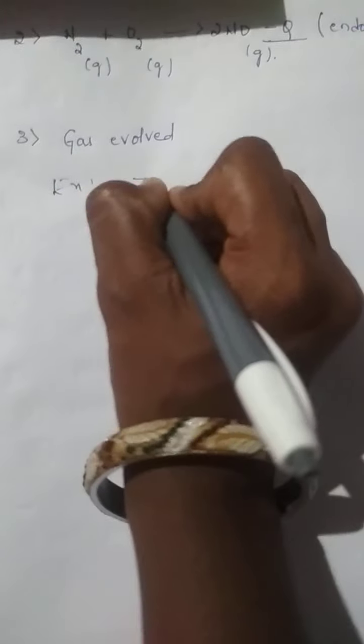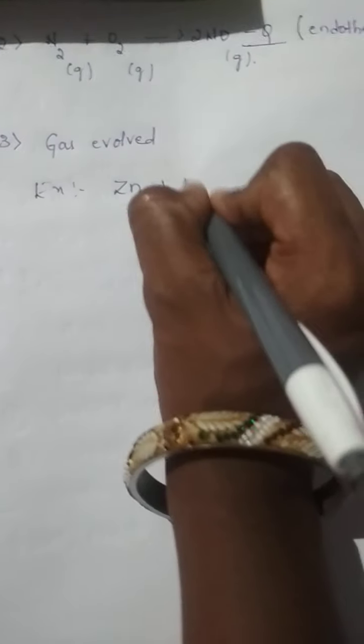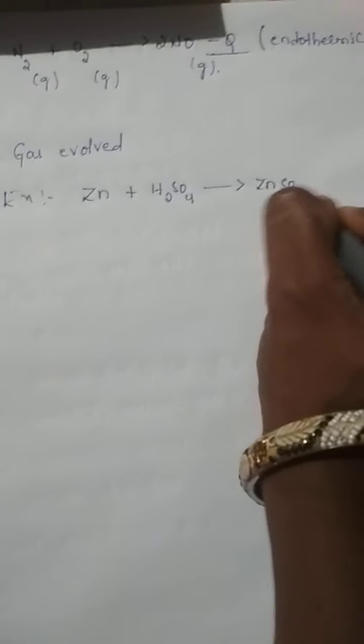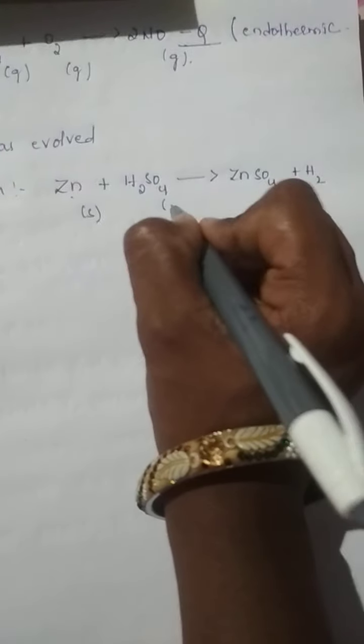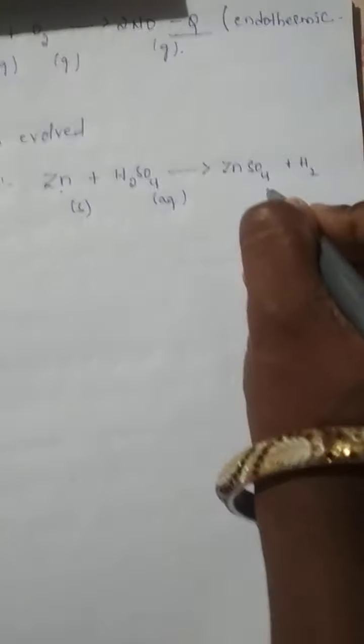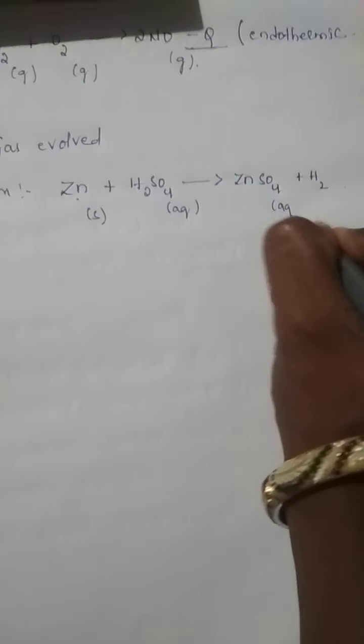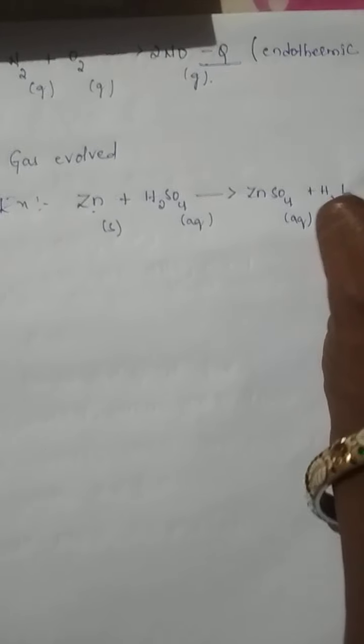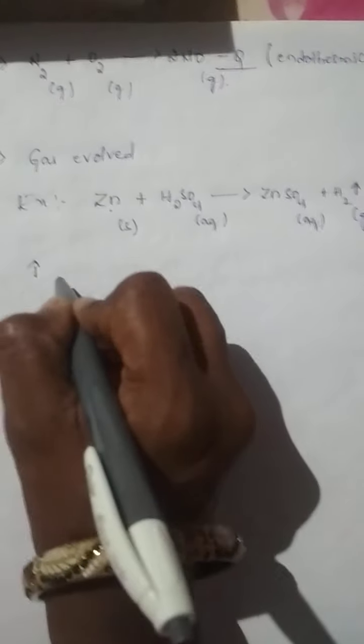For example, zinc plus H2SO4 gives rise to ZnSO4 plus H2. Zinc is a solid, H2SO4 is an aqueous solution, ZnSO4 is also an aqueous solution. H2 is a gas. This H2 is a gas. Gas is represented by upward arrow.